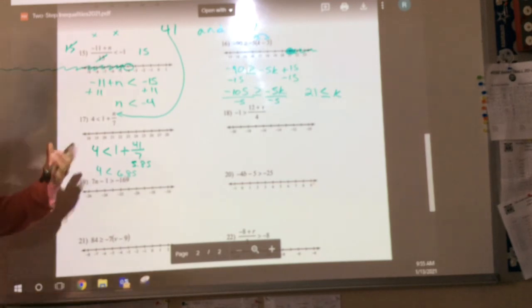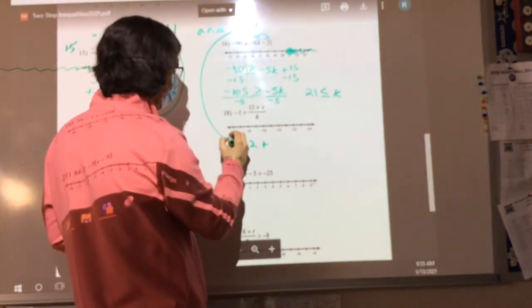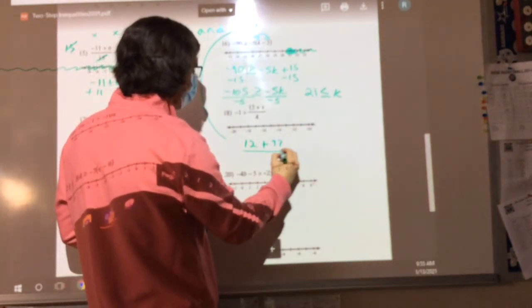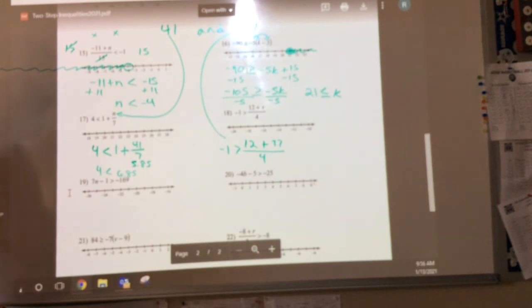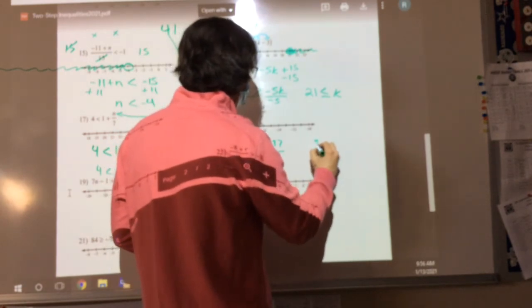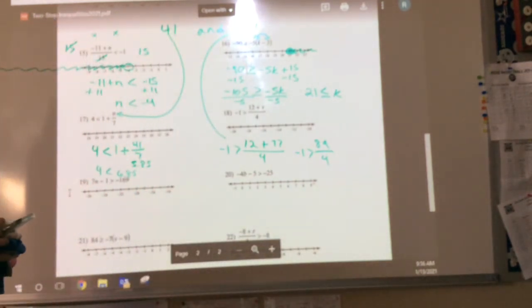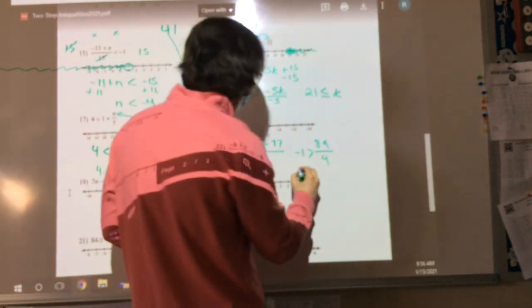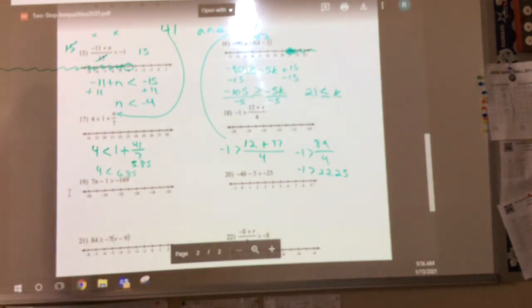Let's go to this one over here. Number 18. 12 plus, let's do 77 for this one. How's that? 12 plus 77 divided by 4 has to be less than negative 1. Okay? Let's find out. 12 plus 77 is what? 89? So now I've got 89 divided by 4 is less than negative 1. Well, 89 divided by 4 is 22.25. Is 22.25 less than negative 1? So does 77 work for that solution? Okay? Does that make sense?